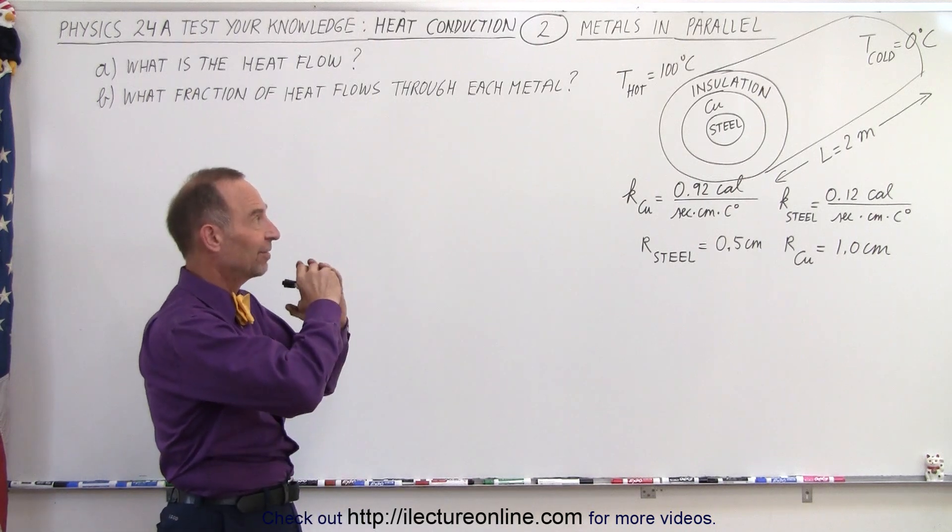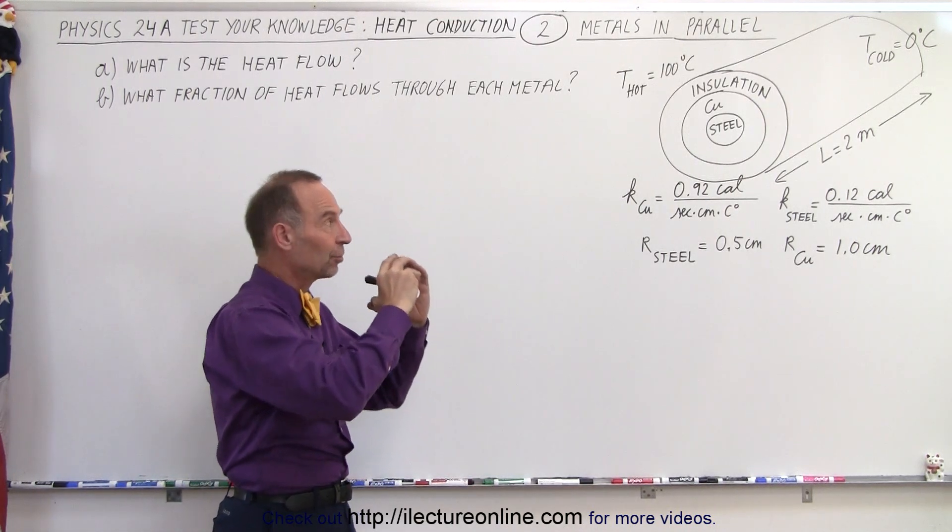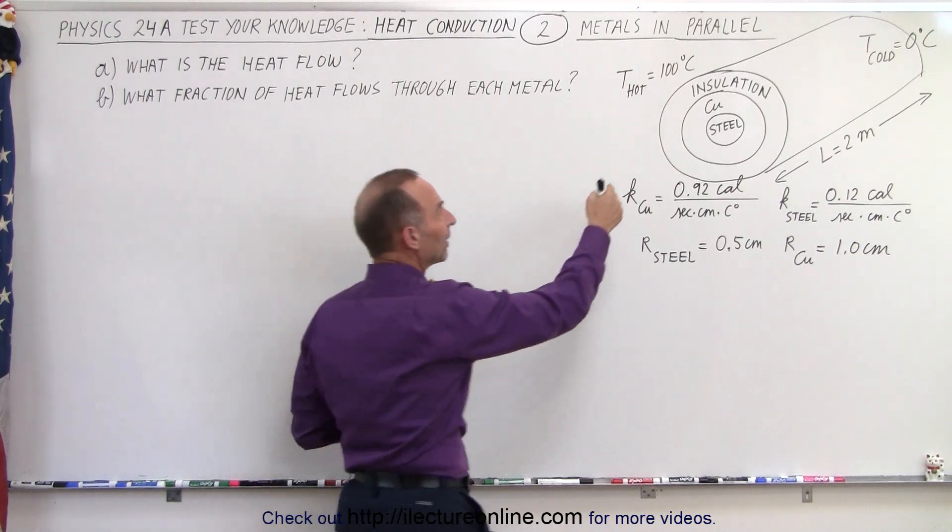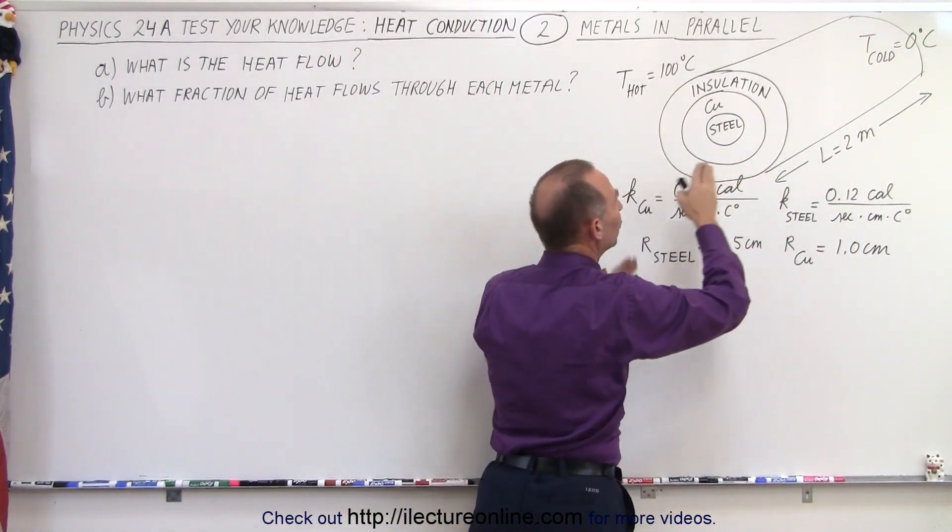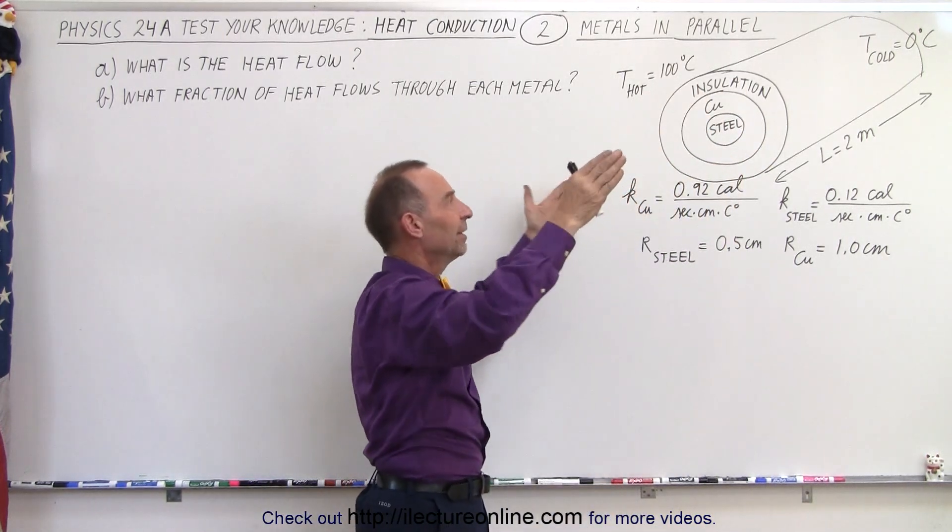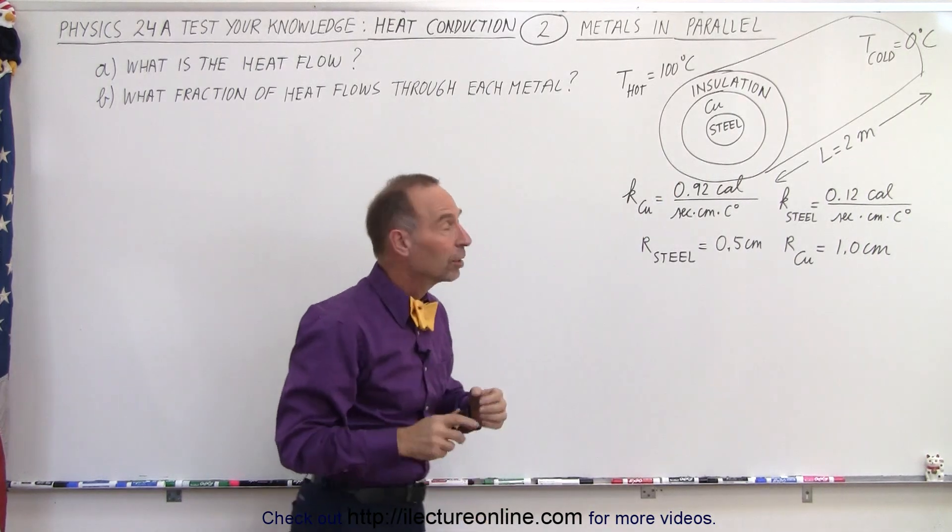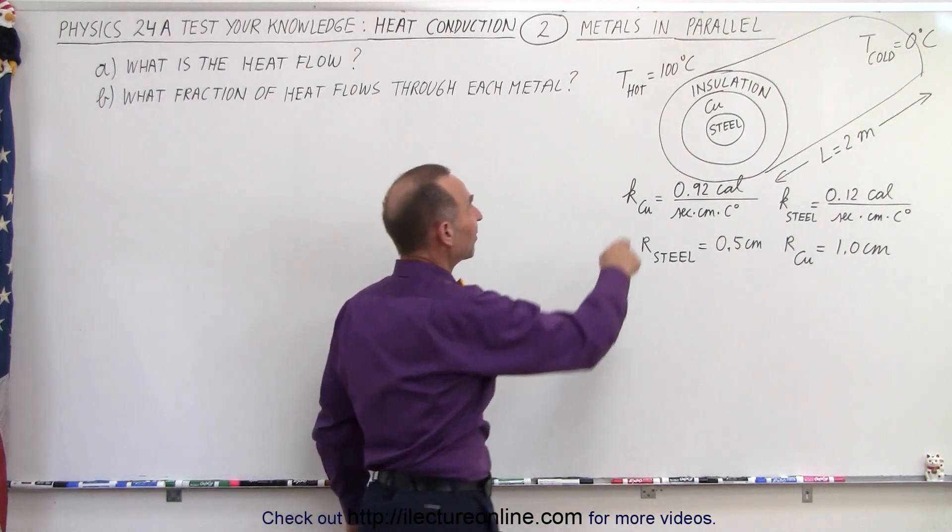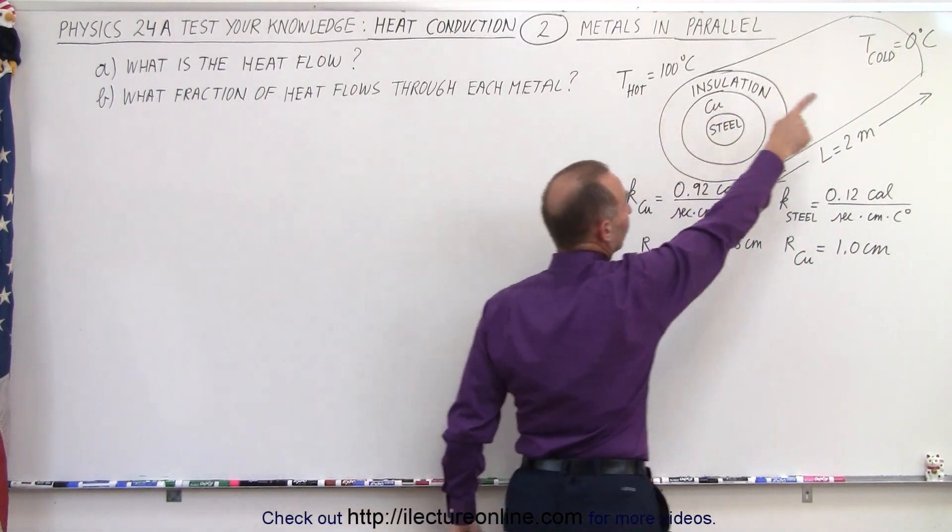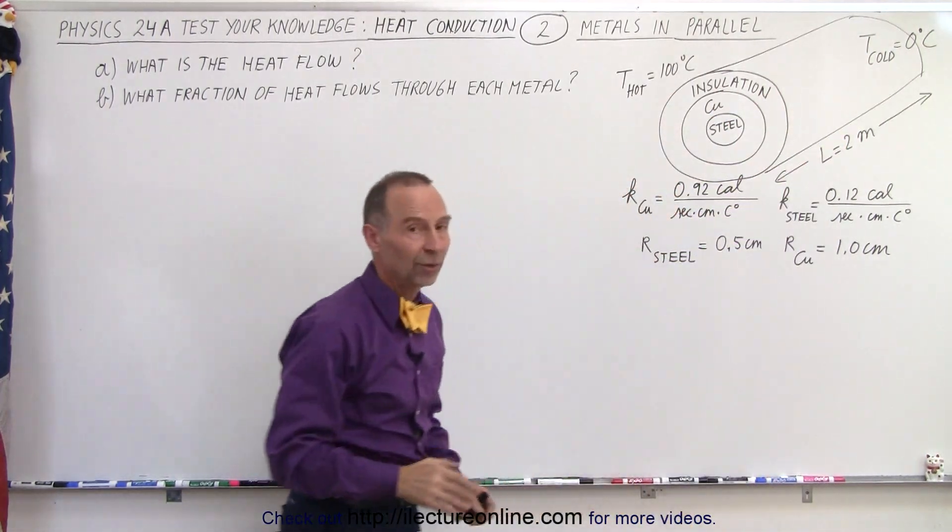In other words, we have a steel shaft and around that a copper shaft, and then all of that is protected by an insulation so that no heat can travel this way. Only heat can travel through the length of those two copper, two steel sections. On the hot side we're at 100 degrees centigrade and at the cold side we are at zero degrees centigrade.